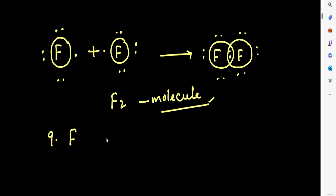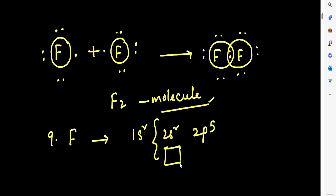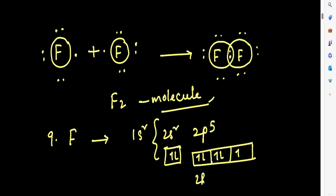Looking at the fluorine atom's configuration again: 1s2 2s2 2p5 — in the outermost shell there are seven electrons. These seven electrons are distributed as 2s2 2px2 2py2 2pz1, which means in both fluorine atoms there is only one vacant 2pz orbital.